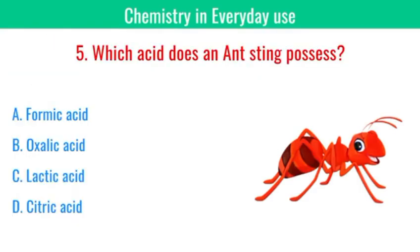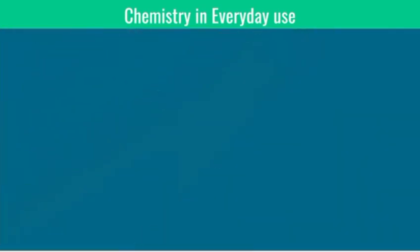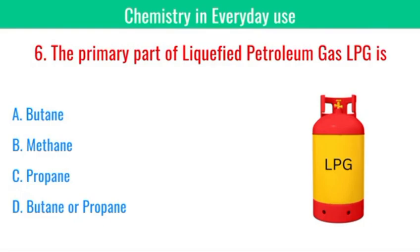Which acid does an ant possess? The correct answer is formic acid. What is the primary part of liquefied petroleum gas, LPG? The correct answer is butane or propane.